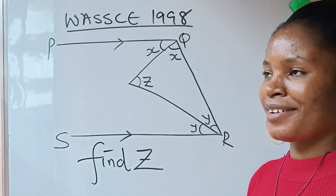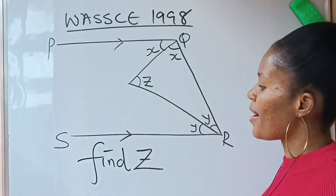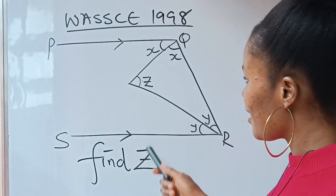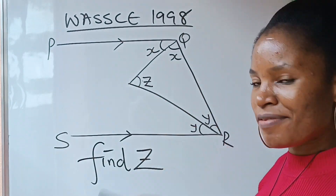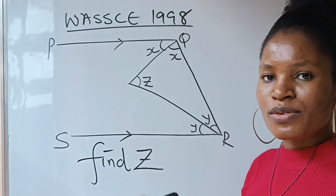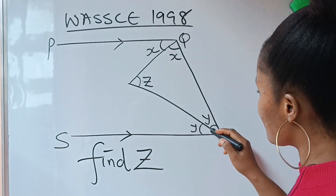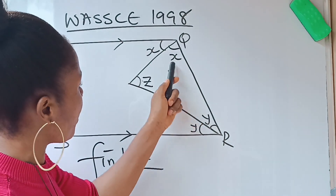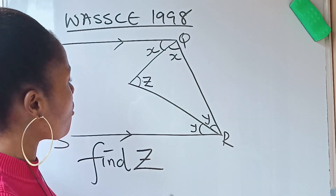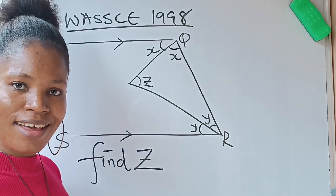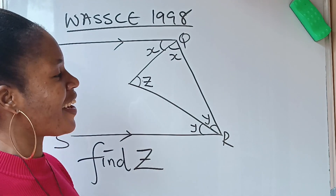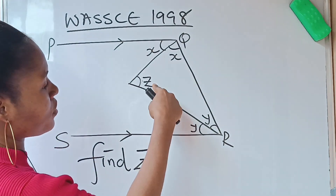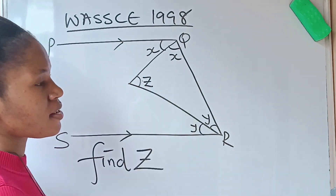Welcome to my channel. We are asked to find z — this angle here — what is the value when nothing is given to us. There is no number here, nothing, and we are asked to find the value of z. Follow me, let's do this together. First of all, we are looking for z.